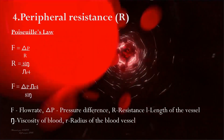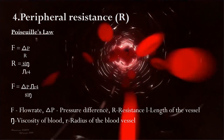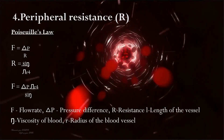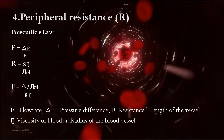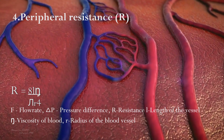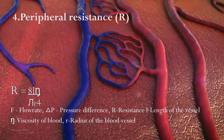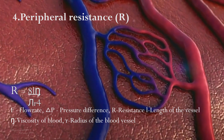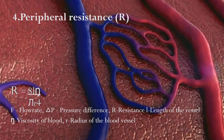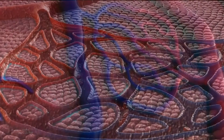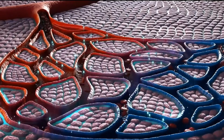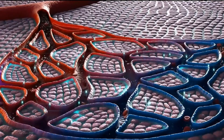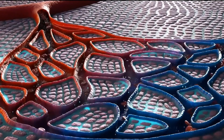Peripheral resistance is the resistance encountered by blood flow in the smaller arteries and arterioles. Factors such as the diameter of blood vessels, viscosity of blood, and the presence of any obstructions affect peripheral resistance. Increased resistance raises blood pressure.